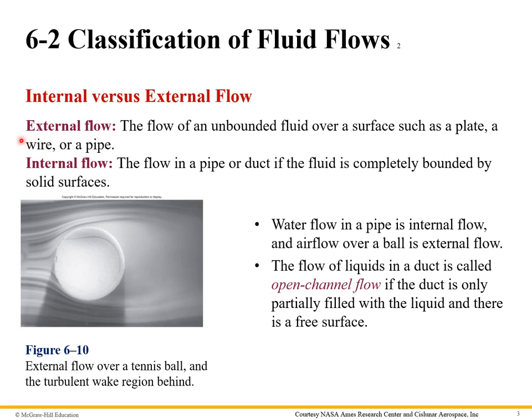Another way to classify flow is by external or internal flow. External is the flow of an unbounded liquid over a plate or around a wire. Internal flows would be flows inside of a pipe.